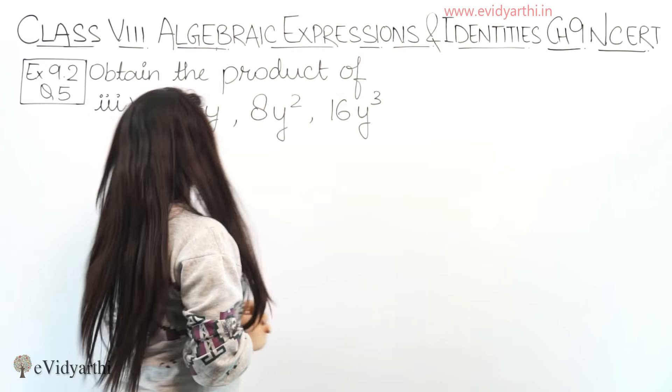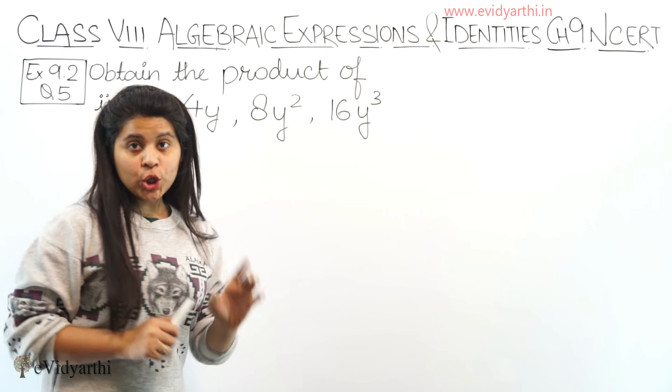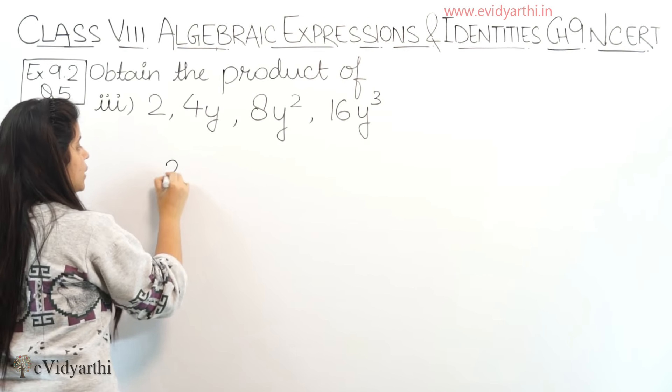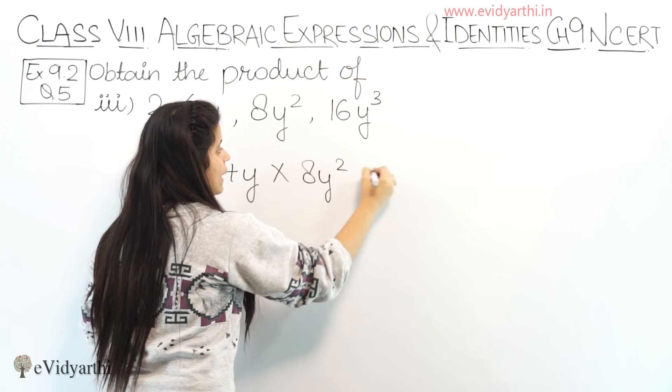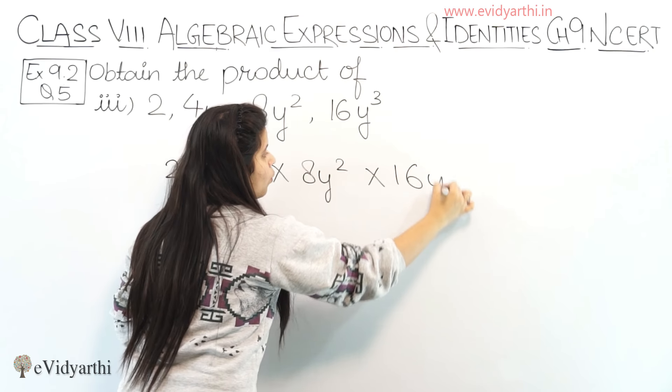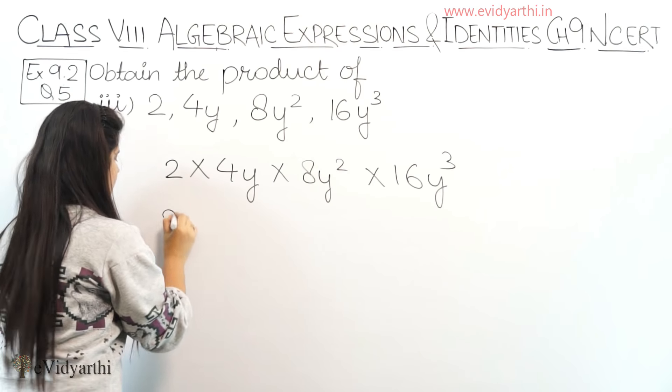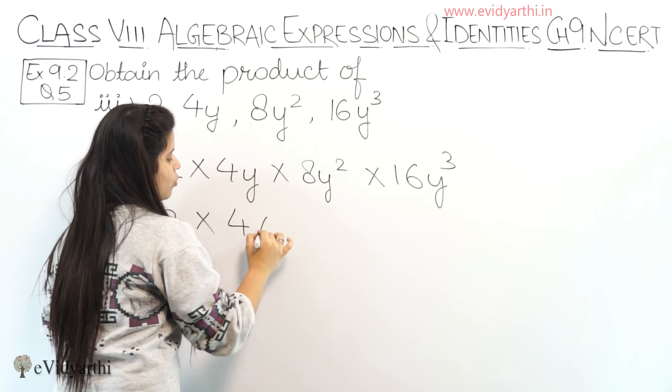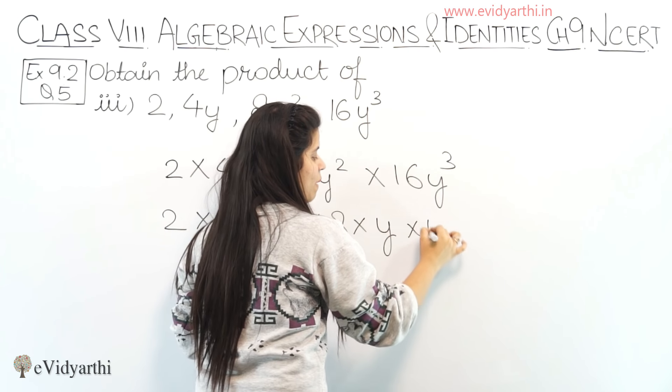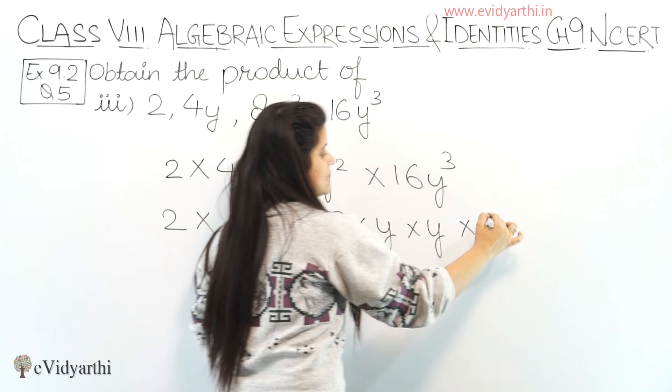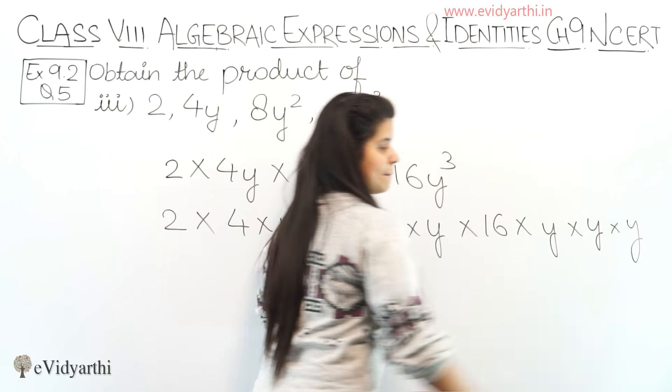Coming to the third part. Third part has 2, 4y, 8y square and 16y cube. So let's multiply: 2 into 4y into 8y square into 16y cube. Now let's expand this. 2 is a constant. Then, 4 into y, 8 into y square means 2 times y, and then 16 into y cube means 3 times y.